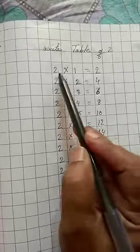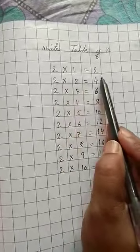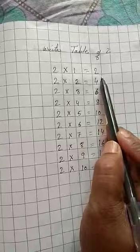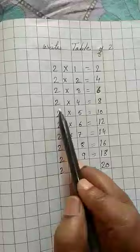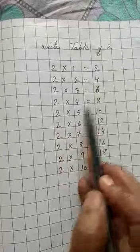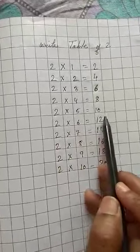We will write like this: 2 ones are 2. You will learn and write. 2 twos are 4, 2 threes are 6, 2 fours are 8, 2 fives are 10.